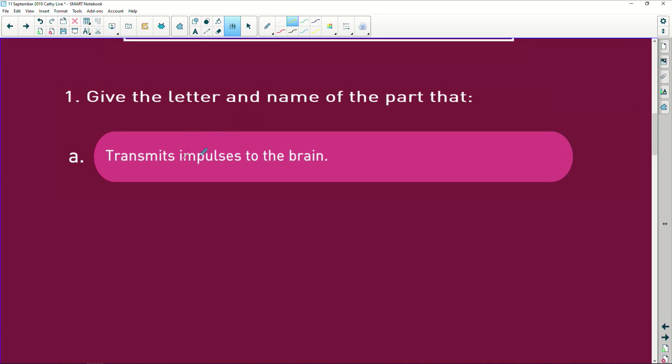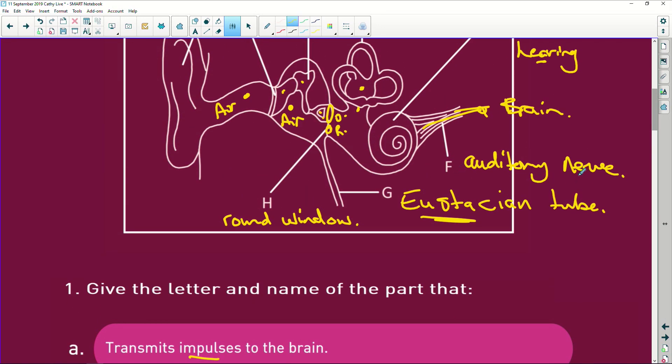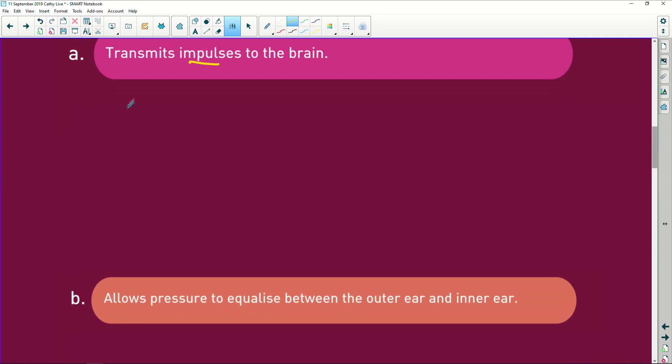it says, give the letter and name of the part that transmits impulses to the brain. So, it's the letter and the part. It is going to be the auditory nerve, which is F. So, F, and it is the auditory. Auditory means to hear. Auditory nerve.